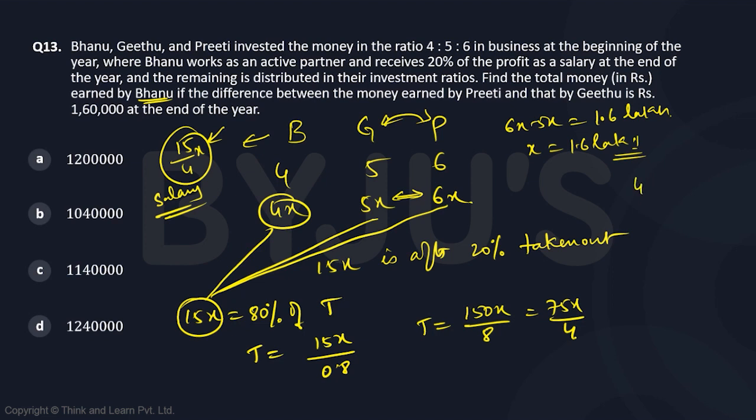So Bhanu gets 4x plus 15x by 4. This is 4 for the 16 plus 15, 31x by 4 where x is 1.6 lakhs. So 31 by 4 into 1.6 lakhs. So 0.4. So this is 4, 4 through the 12, 12.4 lakhs.